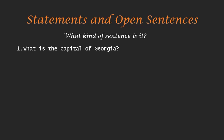"What is the capital of Georgia?" In this sentence, a question is being asked, so this is an interrogative sentence — I'll use 'I' to stand for interrogative. "Atlanta is the capital of Georgia." In this sentence, something is being asserted, so this is declarative. We can determine if it's true or false — and Atlanta is indeed the capital of Georgia, so this is a true statement.